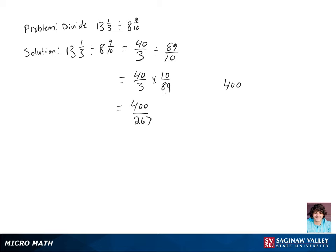Now let's do long division to turn this fraction to a mixed number. Remember, 267 goes into 400 one time, subtract 267 from 400, and we'll get our remainder of 133. So our final answer in mixed number form is going to be 1 and 133 over 267.